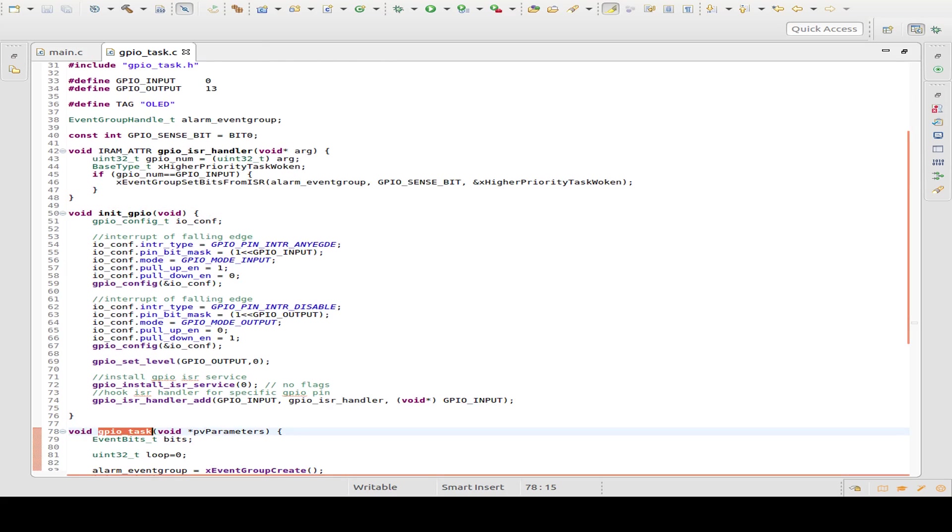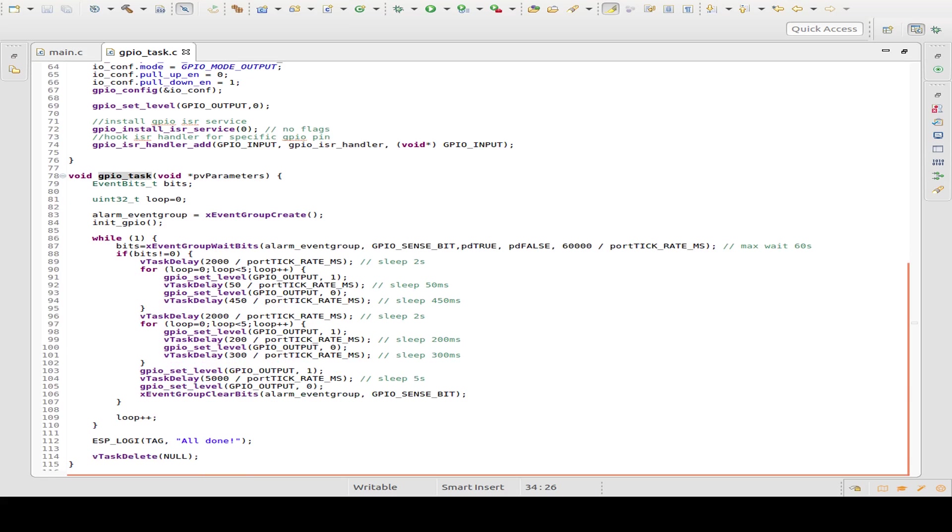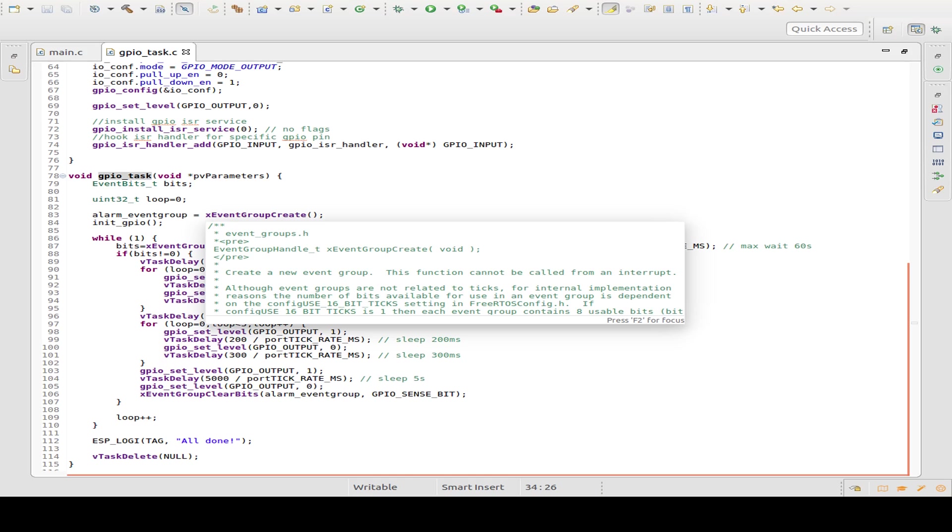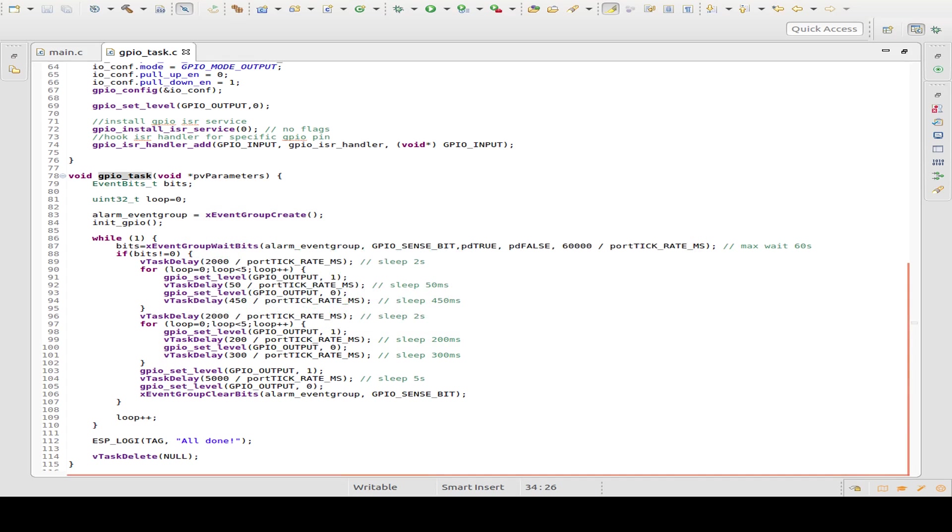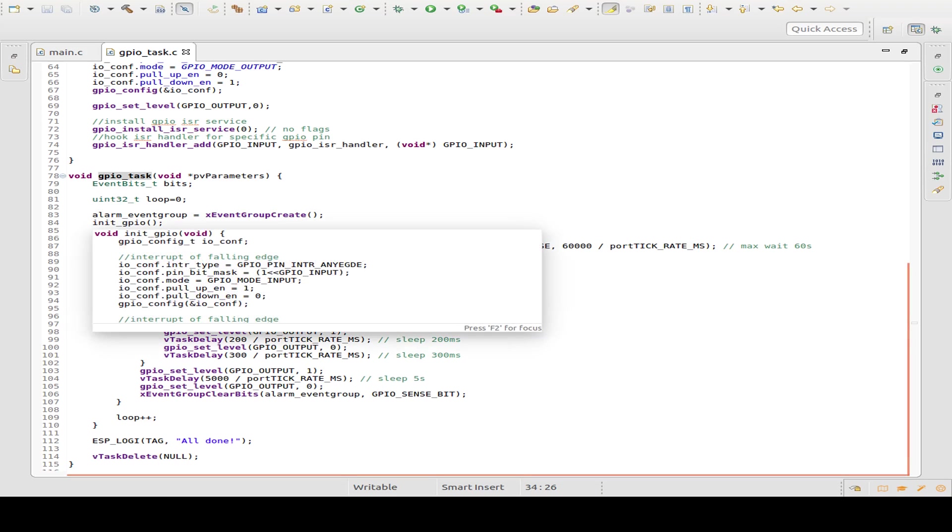We define our input pin at GPIO pin zero, our output pin at GPIO pin 13. Then we look at our task. The task creates an event group. Just watch my video about event groups. And then we initialize the GPIO pin.